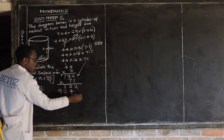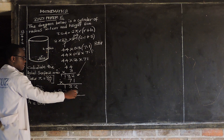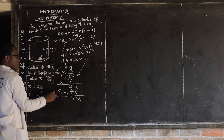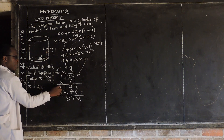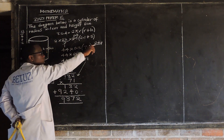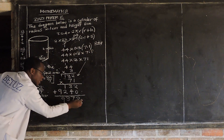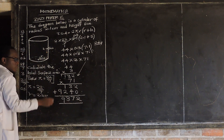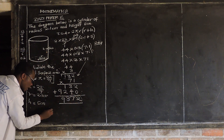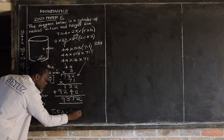Adding: 2 plus 0 is 2; 3 plus 4 is 7; 1 plus 2 is 3; 9 plus 0 is 9. So we get 9372. But remember, we need to take back the two decimal places we ignored. So placing the decimal point two places from the right, our total surface area is equal to 93.72.